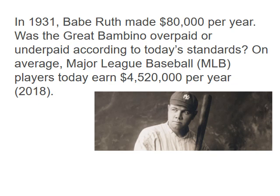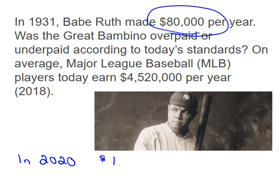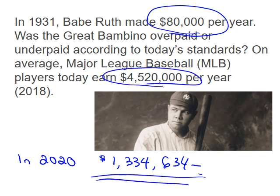Here's an inflation calculator example. In 1931, Babe Ruth made $80,000 per year. Was the Great Bambino overpaid or underpaid by today's standards? On average, major league baseball players earned almost $4.5 million per year as of 2018. Using an inflation calculator, that $80,000 in 1931 would be equivalent to approximately $1,334,634 in 2020 — compared to the $4.5 million players earn today. So the Great Bambino was indeed underpaid, even though $80,000 back then was a huge amount of money.